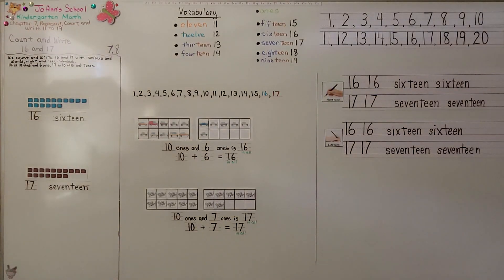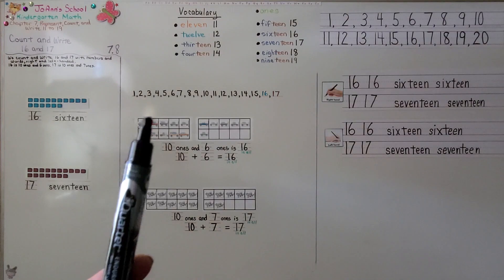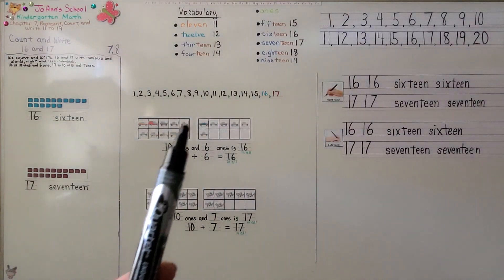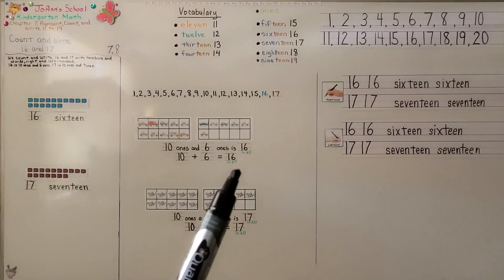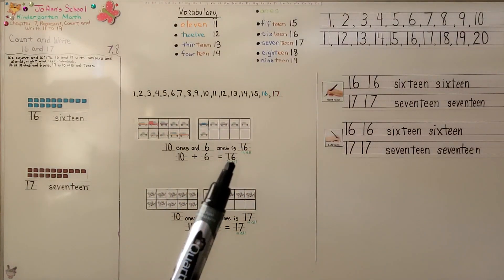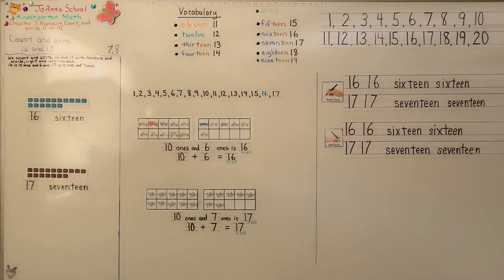Remember to be careful counting, and remember the number in both 10-frames together is the number in all — it's the total. Our next lesson, 7.9, we're going to model and count 18 and 19. I hope you'll join us for the next video. Bye.